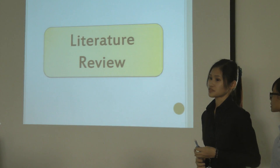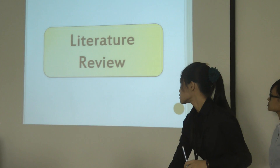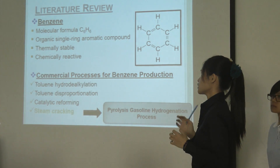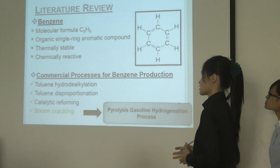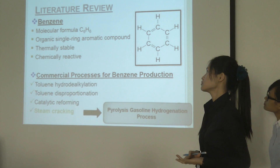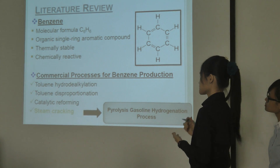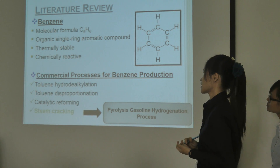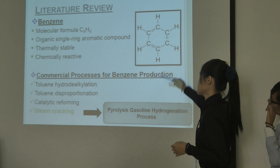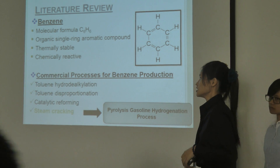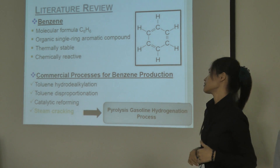I would like to start our presentation from literature review. Basically, what is benzene? Benzene is a chemical compound with molecular formula C₆H₆. It is an organic single-ring aromatic compound, as could be seen from this figure. It is thermally stable and chemically reactive.